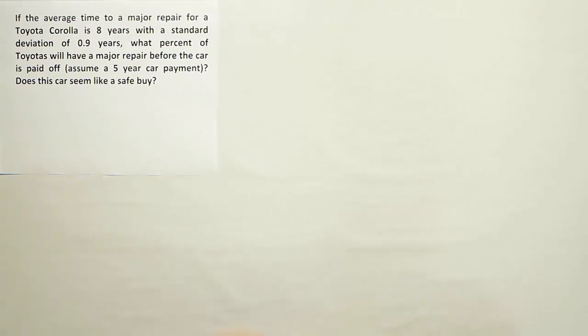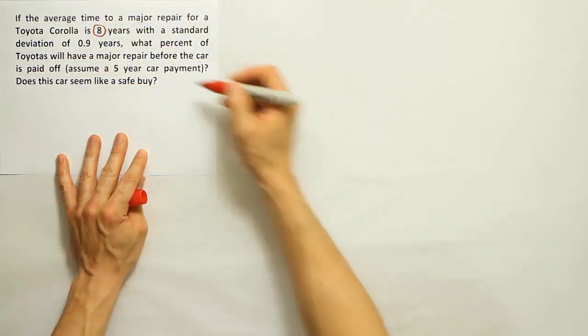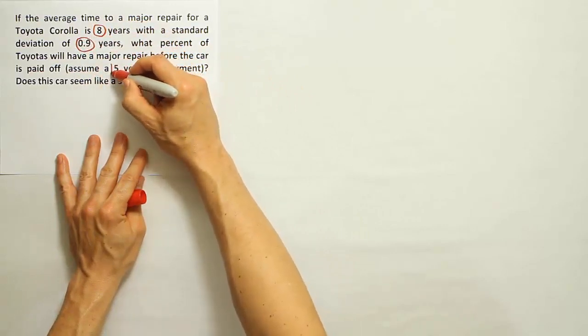Alright, so let's see what they've given us in this problem. They tell us the mean, the average time for a major repair. They tell us the standard deviation, and they give us one other number, this number 5.